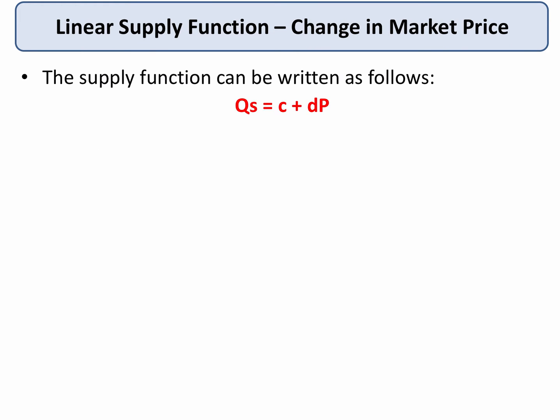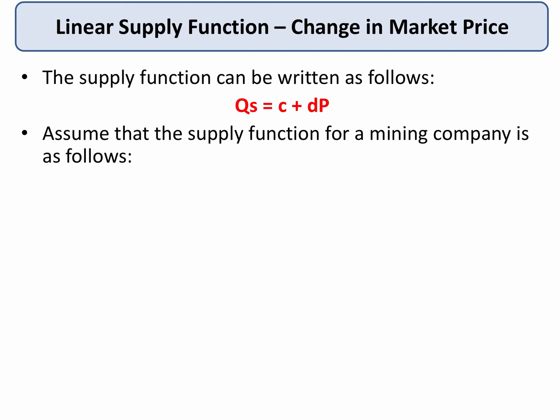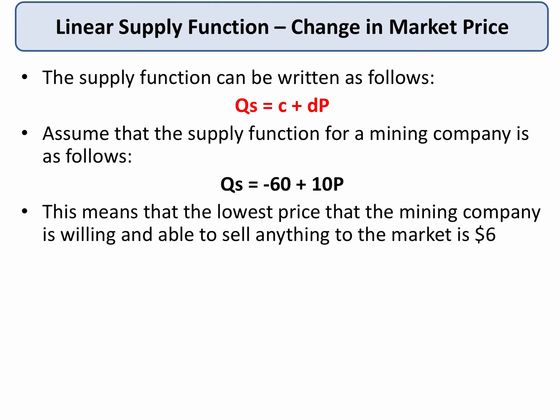Let's take an example. Here's our function again: Qs equals C plus DP. Assume that the supply function for a mining company is Qs equals minus 60 plus 10P. That's quite important — it suggests that for the mining company to dig coal or whatever out of the ground, it needs a certain price. Indeed, the lowest price that the mining company is willing and able to sell anything to the market will be $6.